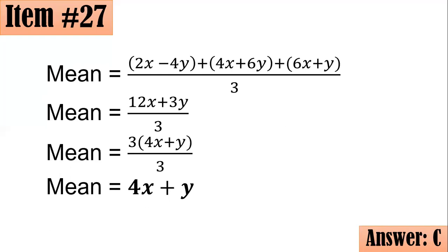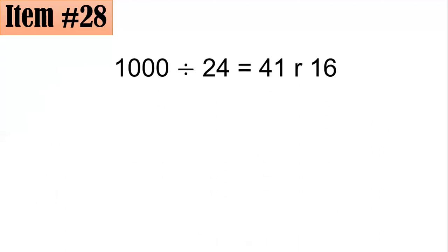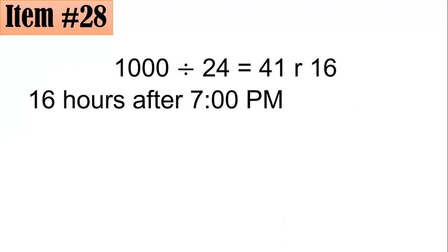Item 28: The time is 7pm. What time will it be 1000 hours from now? We know there are 24 hours in a day, so we divide 1000 by 24. That gives 41 with a remainder of 16. So we need to count 16 hours after 7pm.